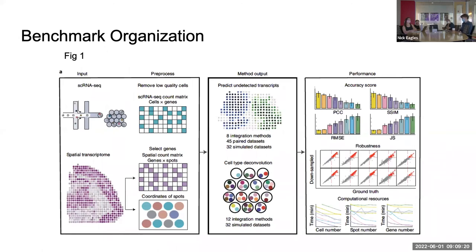They have a figure that really nicely summarizes everything they did in terms of benchmarking these different methods. The two inputs are single cell RNA-seq data and some sort of spatial transcriptomics data. In the middle, they used 45 paired datasets from the literature and also simulated data. The two tests were predicting undetected transcripts spatially — integration — and cell type deconvolution.